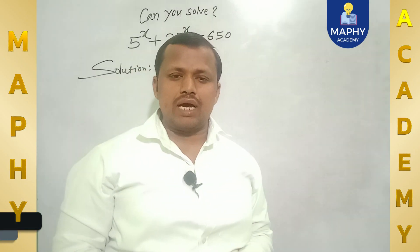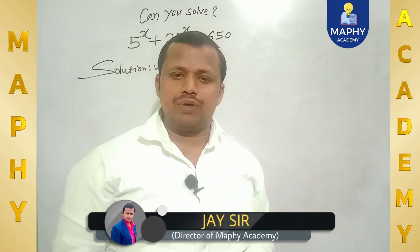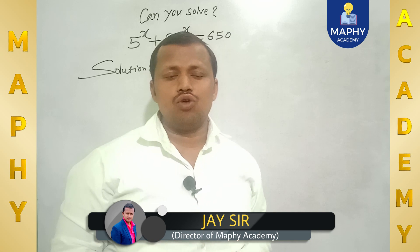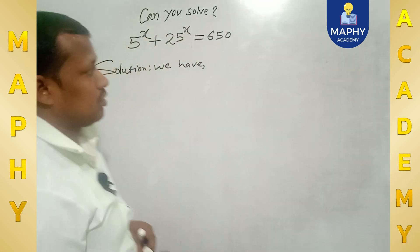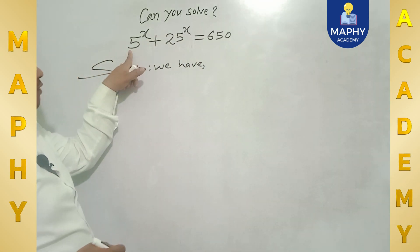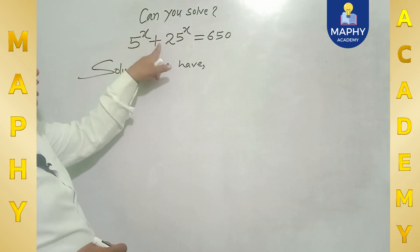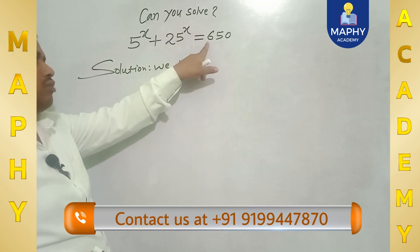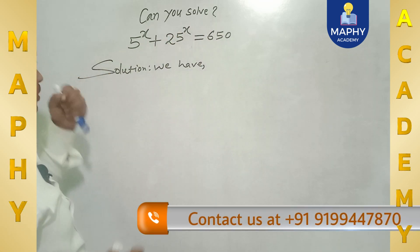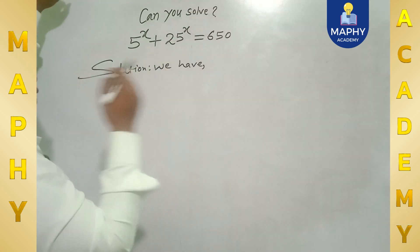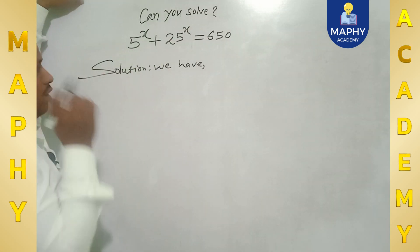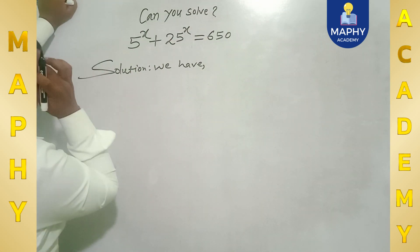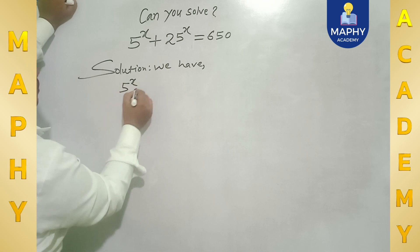Dear friends, welcome back to this channel Mafia Academy. Let's start to solve a new tricky question. The question is: 5 to the power x plus 25 to the power x is equal to 650. What is the final value of x?